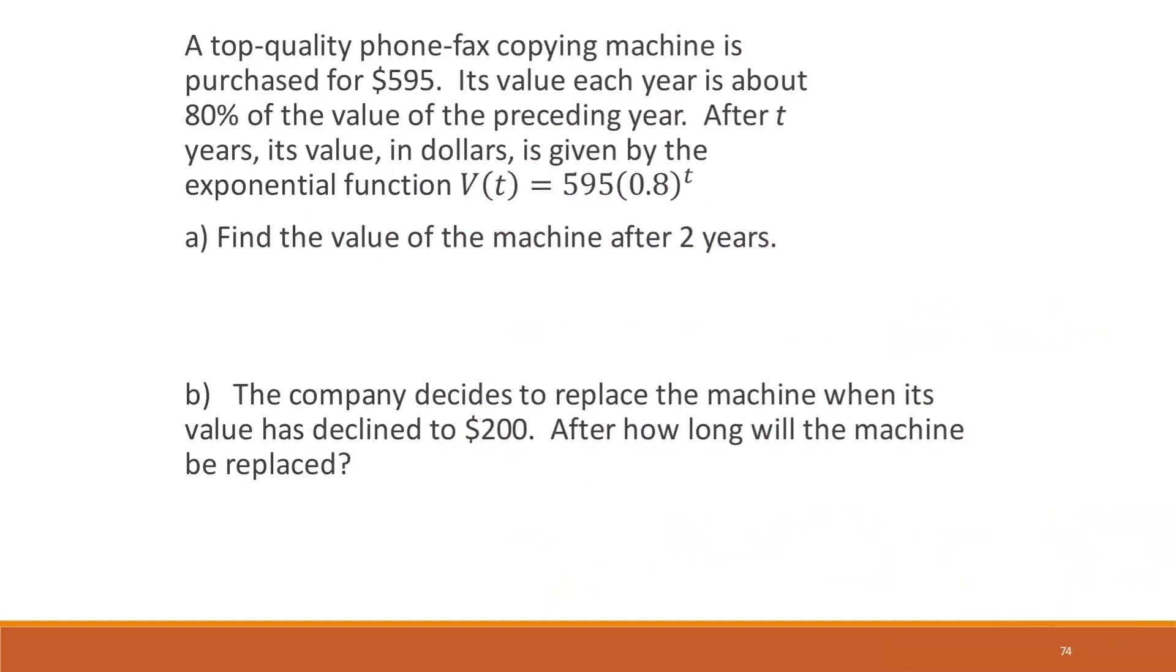And we have one more example here. A top quality phone fax copying machine is purchased for $595. Its value each year is about 80% of the value of the preceding year. After t years, its value in dollars is given by the exponential function V(t) equals 595 times 0.8 to the t. Find the value of the machine after two years. So that's just substituting in 2 to the formula. You should be able to put that straight into a calculator. And it would give you $380.80.